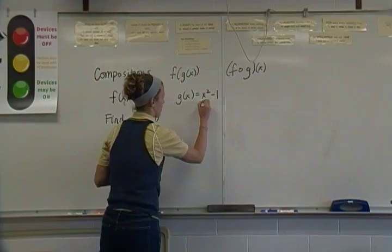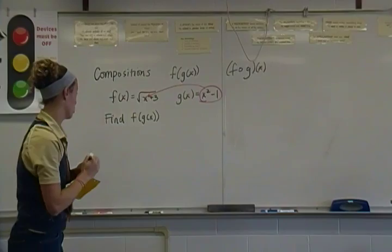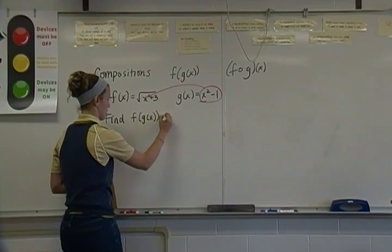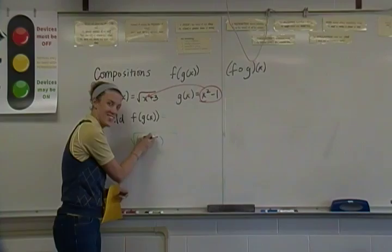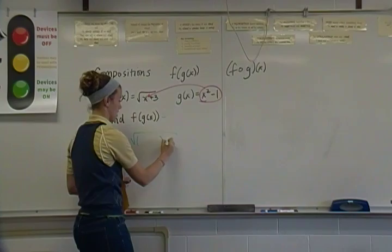I'm using color here. So I've got this g function, and I'm going to put it inside of that f function. So I'm going to start with my f function and write that down. I've got the square root of something in parentheses because we're not going to write the x this time. We're actually going to put that g of x inside here.